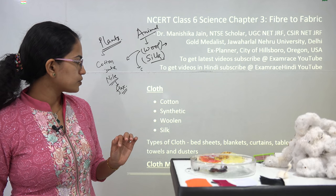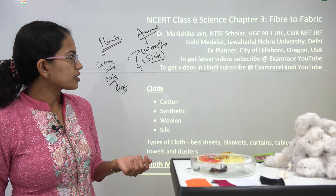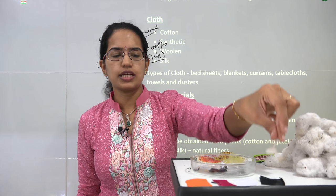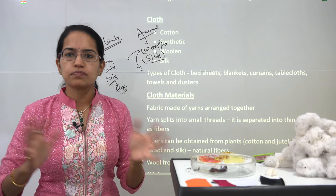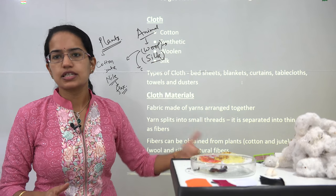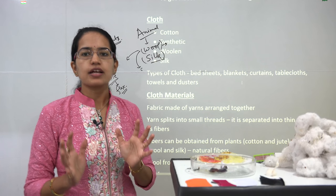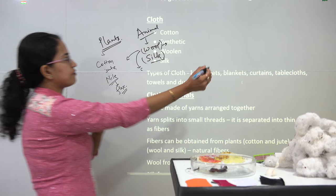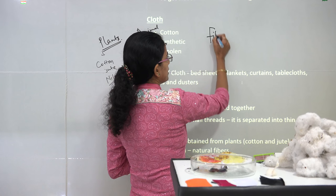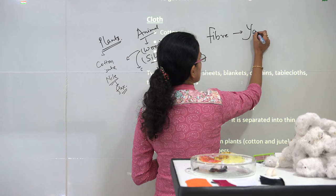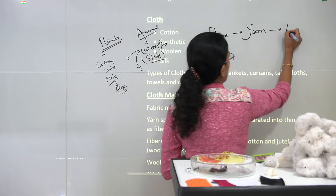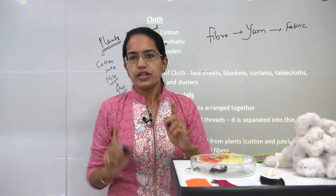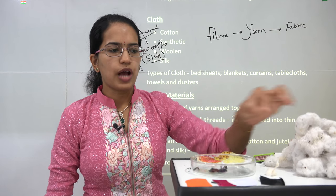Now let's talk about the uses of cloth. Cotton is used in lamp wicks for lighting, and also in pillows, mattresses, bed covers, and curtains. The basic process to understand is: fiber is converted into yarn, and then yarn is converted into fabric.